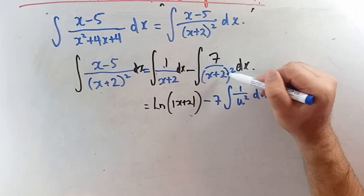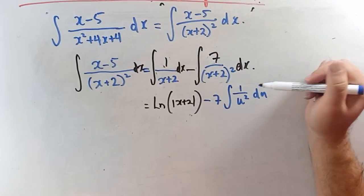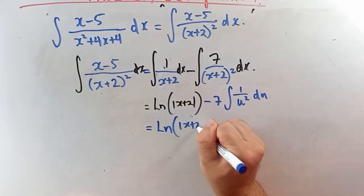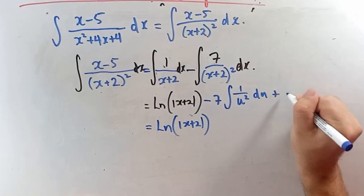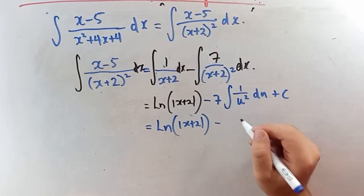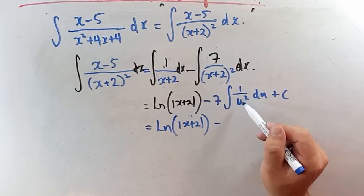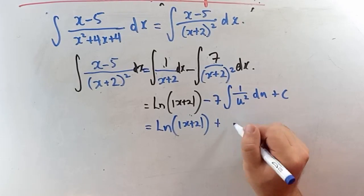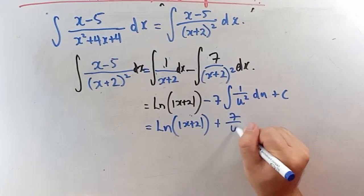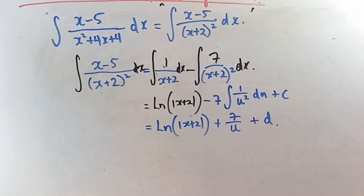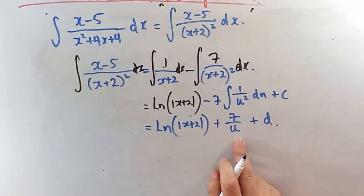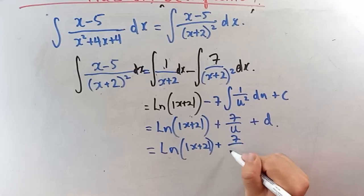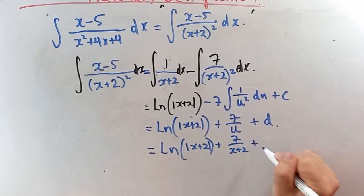Substituting u equals x plus 2, du/dx equals 1, the second integral becomes minus 7 times the integral of u to the negative 2 du, which gives plus 7 over u. Substituting back, the result is ln|x plus 2| plus 7 over (x plus 2) plus c.